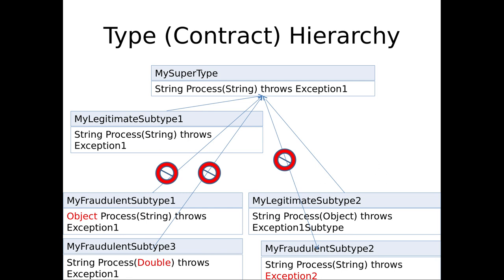How about subtype 2? My legitimate subtype 2 can take in an object instead of just a string, returns a string, and throws an exception that's a subtype of exception 1. Is this legitimate? Yes. If someone calls process on the subtype thinking they have a supertype instance and pass it a string, it will happily accept the string. They're expecting a string back — they get a string back. Or if there's an exception that's a subtype of exception 1, they won't be disappointed because they're ready for exception 1 — anything that handles exception 1 will handle that.